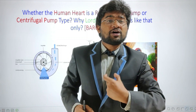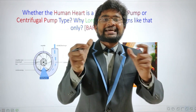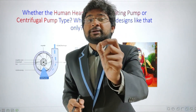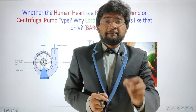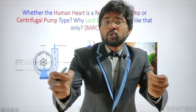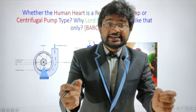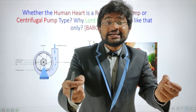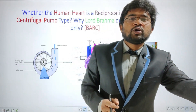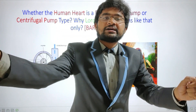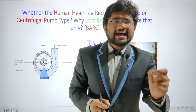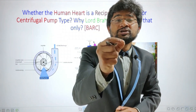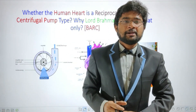If God had designed our heart as a centrifugal pump type, what would happen? Once blood enters into the centrifugal pump type heart, centrifuge action would take place. Blood contains hemoglobin and water content, and both are having different densities. Due to centrifuge action, hemoglobin and water would get separated — hemoglobin would go in one direction, water would go in another direction. To avoid this problem, as a good mechanical engineer, God designed the human heart as a reciprocating pump type instead of a centrifugal pump.